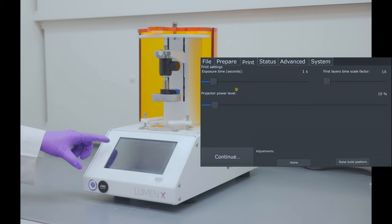Here, we will adjust the exposure time, power level, and the first layer time scale factor. Today, we will be printing with Cellink PEGDA Start material. The print settings for this material can be found online.